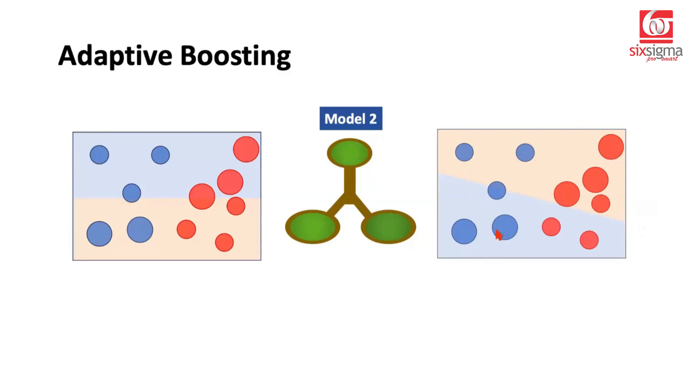But model 2 is still making some errors because as per model 2, anything below this slanted line would be blue, anything above this would be red. And if that is the case, while the earlier errors have been corrected, we seem to be making some new errors. And what are those? These are these points. However, these points are clearly misclassified.